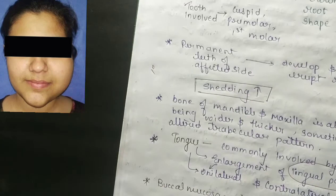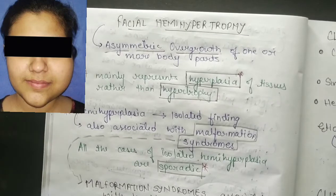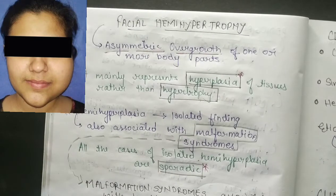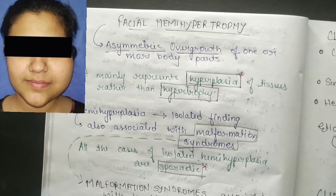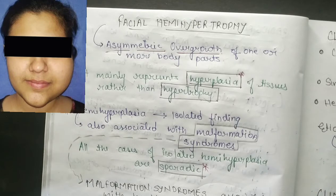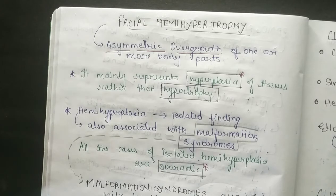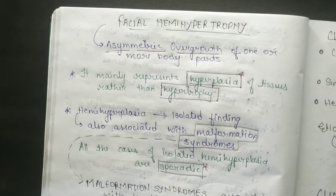To summarize: facial hemihypertrophy is an asymmetric overgrowth of one or more body parts. The classification has three types: complete, simple, and hemifacial. Clinical features include one side being more affected, increased size and early eruption of dentition, macroglossia, and it is more common in females than males.